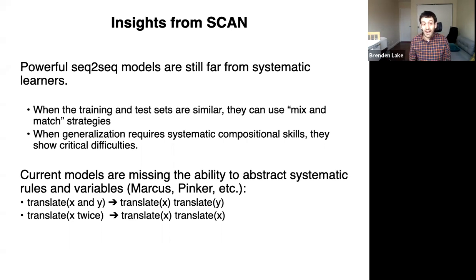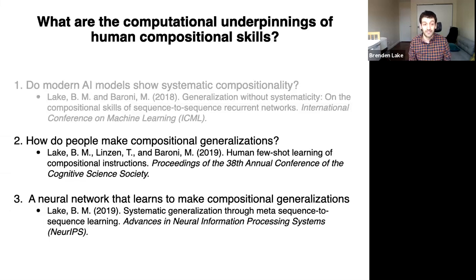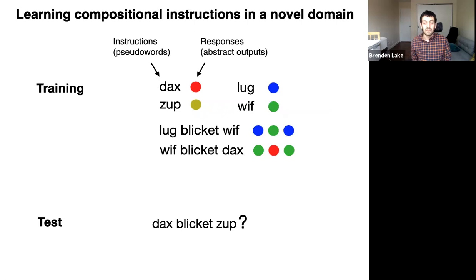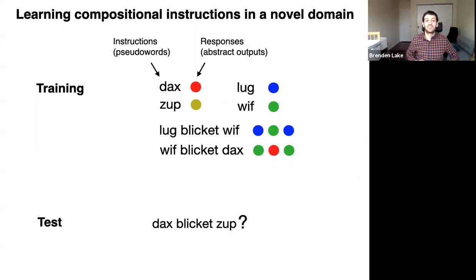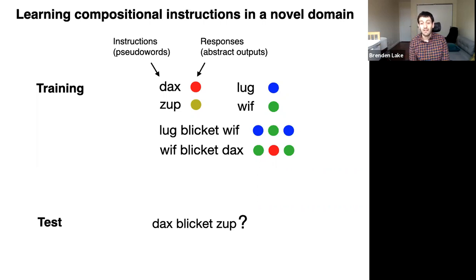Now we're going to look to people to try to understand if we can get some insights about how people make compositional generalizations and why our mind might be different. This was a paper with Tal Linzen, Marco Baroni, and myself at the Cognitive Science Society. We wanted to create an artificial domain of instructions inspired by SCAN, but with only a few training patterns — unlike thousands like in SCAN — so we can actually train people on it, on the order of a handful of patterns, and minimize knowledge of any specific language.